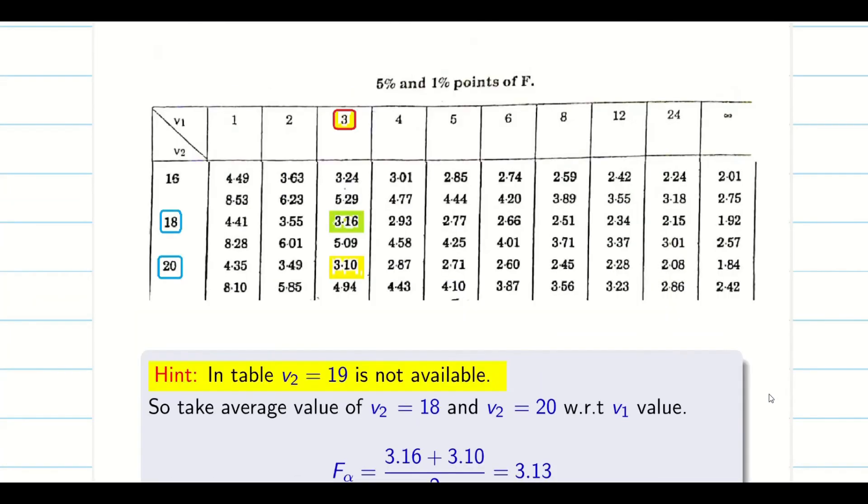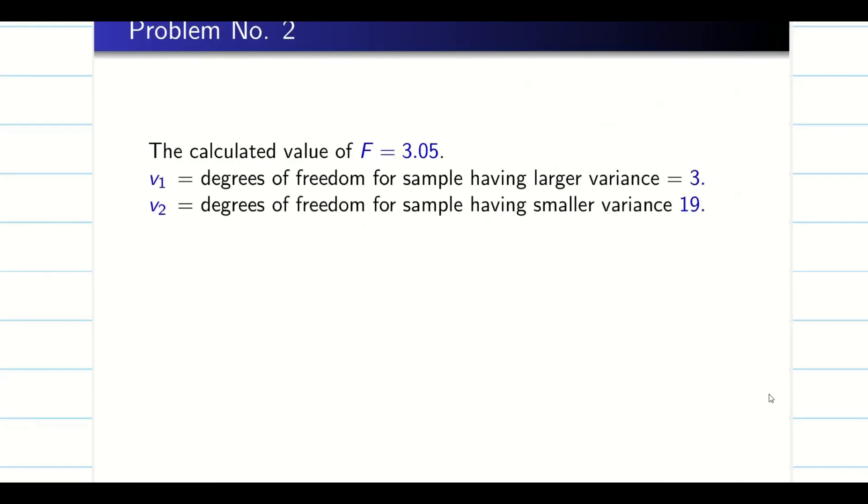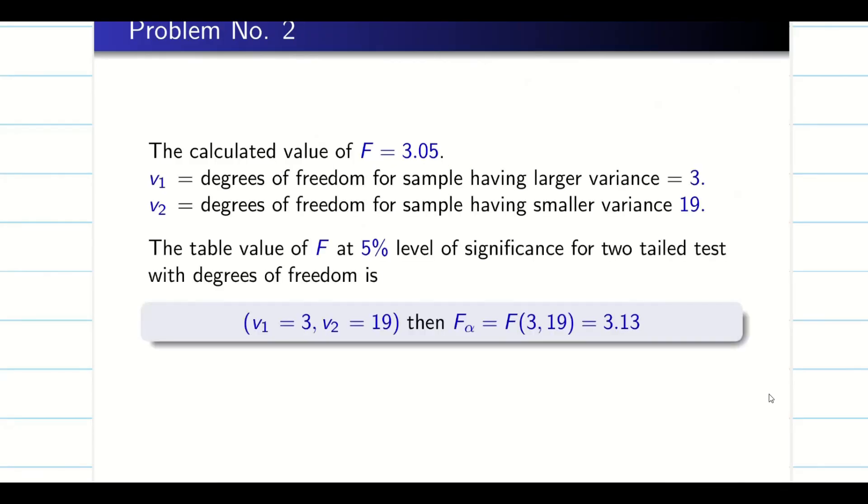So now I will take the calculated value is 3.05. When I found the alpha value, my F alpha value is 3.13. So calculated value is going to be lesser than the table value. So finally, I conclude H0 is accepted. So there is no difference between all the four data A, B, C and D.